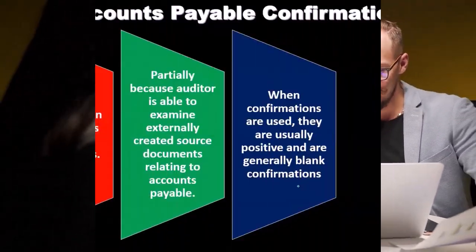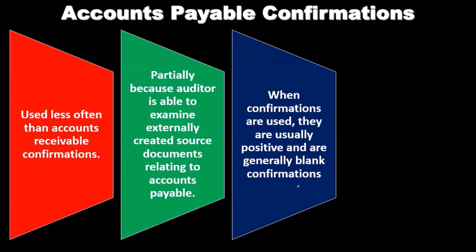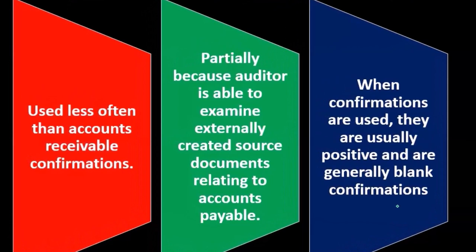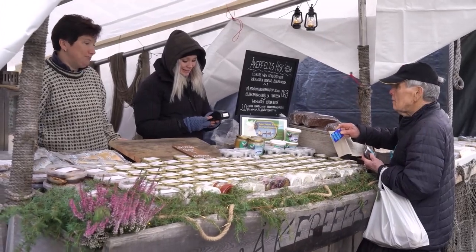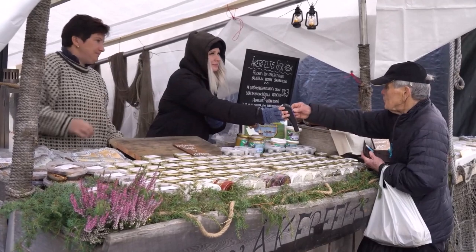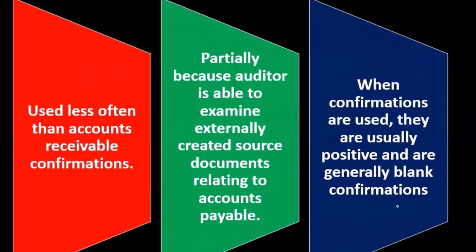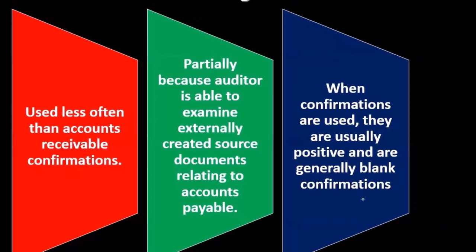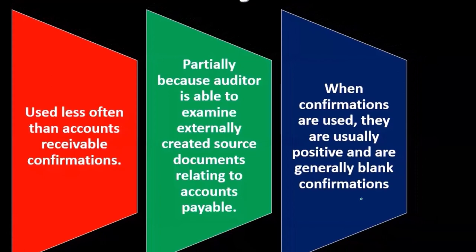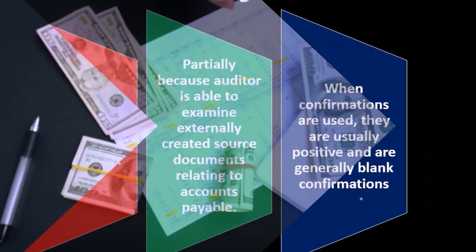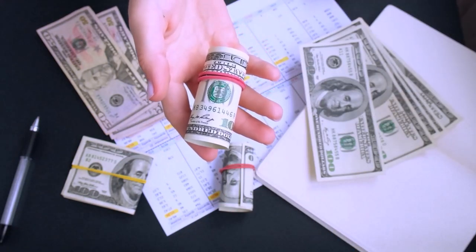Notice that with accounts receivable confirmations, the person receiving it owes the company money, so they have less incentive to be cooperative — they might not want to deal with it or may dispute the balance. However, with accounts payable, we're dealing with vendors whom the company we are auditing owes money to. If we ask them how much they're owed, they're more likely to know exactly what that is and have incentive to look it up and send it back, resulting in a higher response rate.